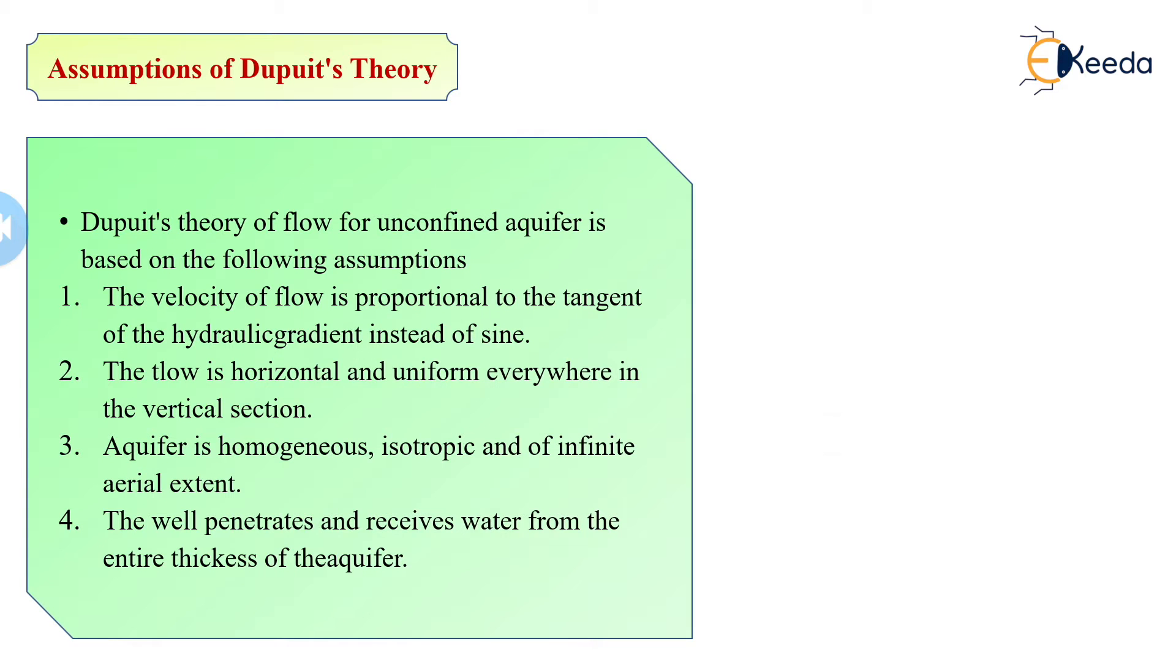So here, in the first assumption, the flow is not horizontal, especially near the well. Also, the piezometric surface attends greater flow as it approaches the well boundary with the result that this assumption 1 is an approximation.